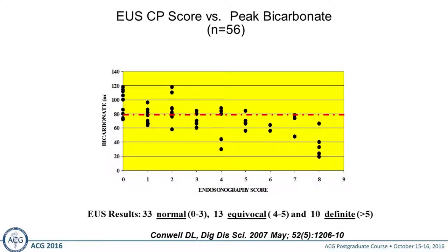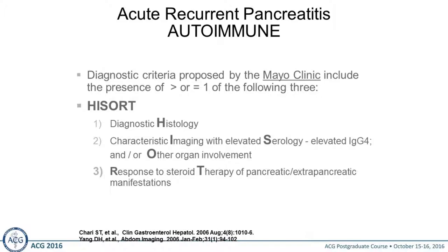Once you get to about five EUS features, using a bicarbonate concentration cut point of 80, you definitely have changes of chronic pancreatitis. Less than that — especially in the three to four criteria range — is very shaky. Does a person really have early chronic pancreatitis? It's important to recognize why we want to stop recurrent acute pancreatitis: because we do not want patients to develop chronic pancreatitis, for which there is currently no treatment.